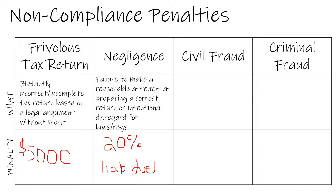The IRS is responsible for determining whether an error on a tax return is due to negligence or is truly due to an error. A strong case for negligence is whether the taxpayer should have known better. A taxpayer who has a CPA certification or earns their MBA should know the tax law. The presence of supporting documentation to justify tax decisions can be used to justify error versus negligence, as well as cooperation during the audit.